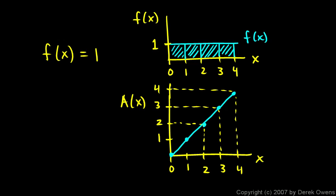Now what function is this? This is a function of x that tells us how much total area has been accumulated under the graph as we go from 0 to the right a certain amount x. You can see that the area function, A(x), is the function y equals x — so the area function is given by that.